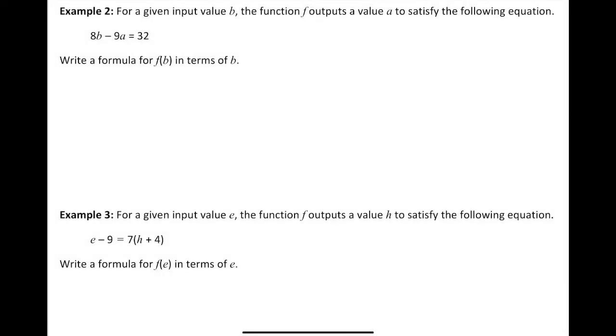Moving on to Example 2. It says: for a given input value b, the function f outputs a value a to satisfy the following equation. We've got 8b - 9a = 32. This is essentially the same thing. We've got an input of b. We want to make sure b is part of the equation. It's the input. We're going to get a by itself.